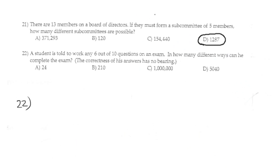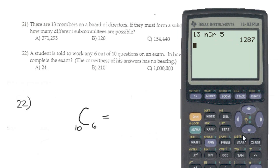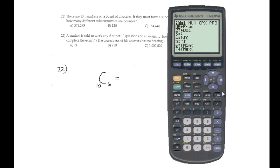Okay, number 22. A student is told to work any 6 out of 10 questions on an exam. In how many different ways can he complete the exam? The correctness of the answer has no bearing. In other words, it's not important the order. It's typical combination. 10 questions, 6. Calculator: 10, mathematics, PRB, option 3, 6. The answer is 210, option B.